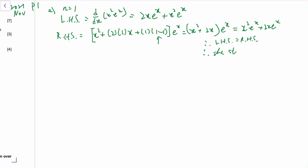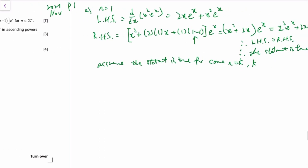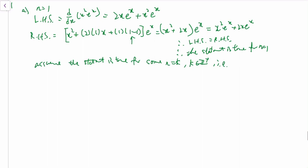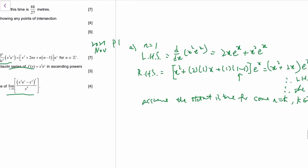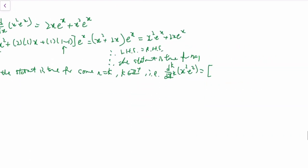Therefore the statement is true for n equal to 1. Now for the assumption step: assume the statement is true for some n equals k, where k is a positive integer. This means if we take the kth derivative of x²eˣ, we get the formula: (x² + 2kx + k(k−1))eˣ.